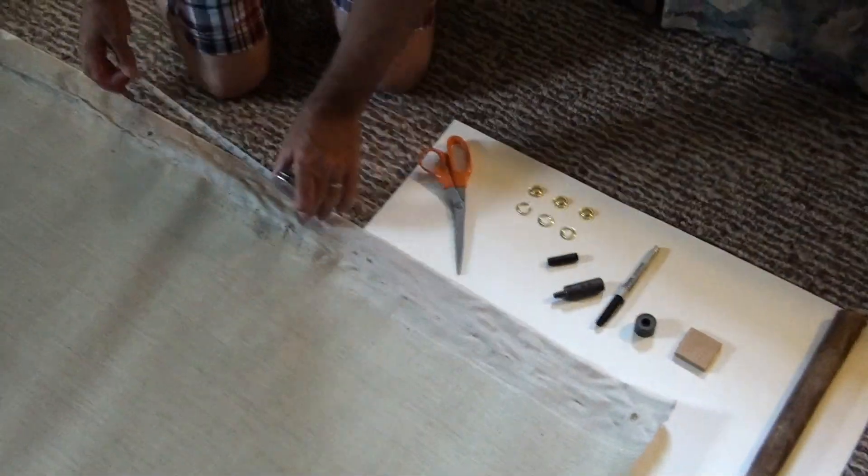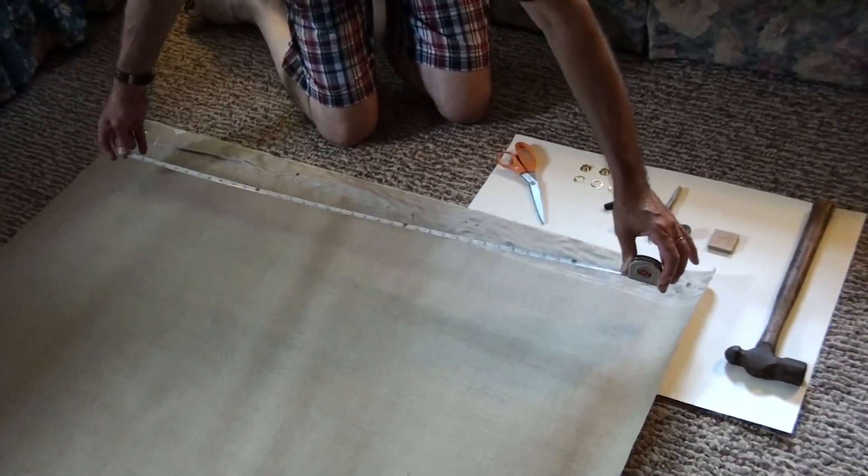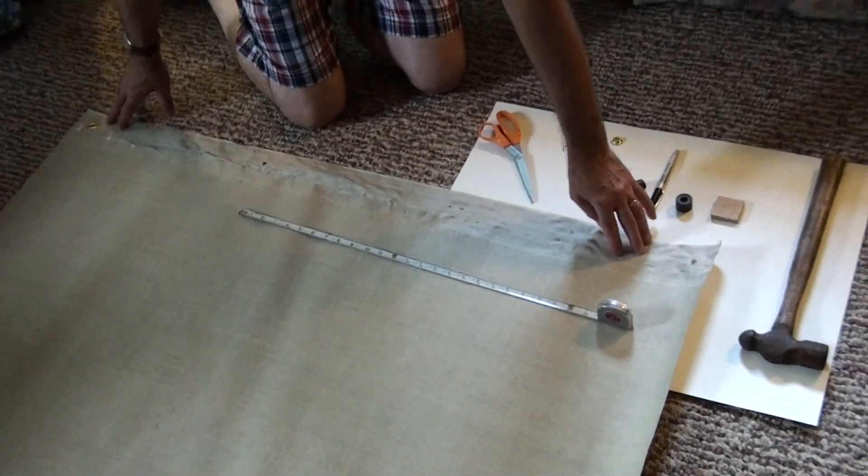First, you want to equally space your grommet holes. I suggest about an inch in from each side, and then using a measuring tape you can divide the space into equal areas.